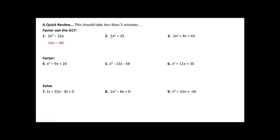For example two, we have the quadratic binomial 5x squared plus 25. Both 5 and 25 can be divided by 5. This first term has an x but this one does not, so all I can do is pull out my 5. Notice that 5 times x squared is 5x squared and 5 times 5 is 25.